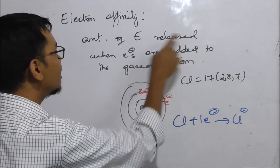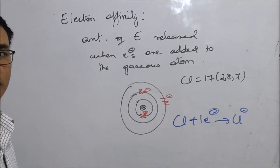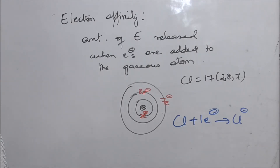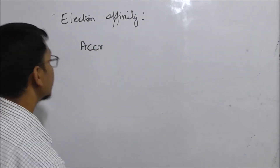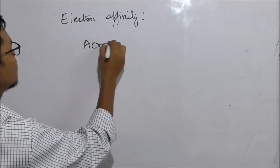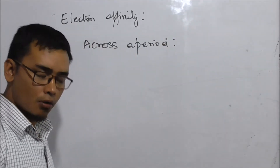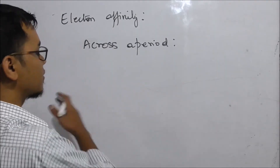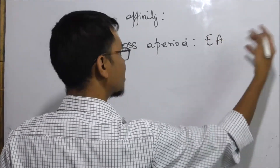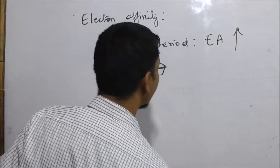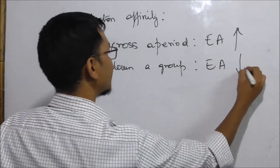So the amount of energy released when electrons are added to the gaseous atom is known as electron affinity. The variation across a period and down a group: across a period it increases, and down a group electron affinity decreases.